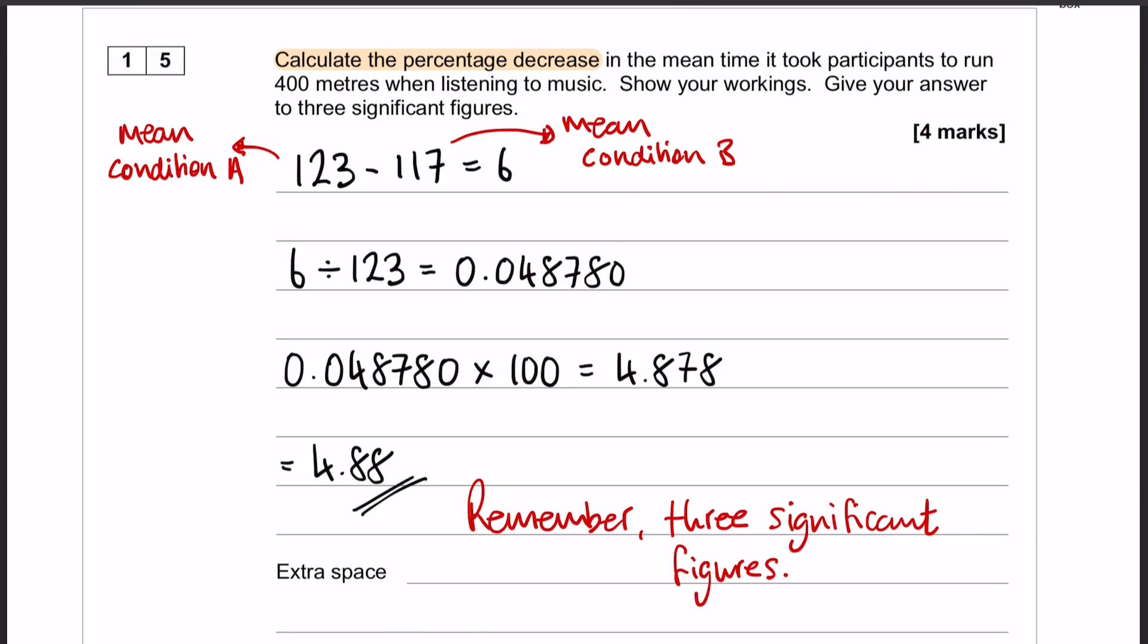Okay, so we need a percentage, obviously, because we're doing a percentage decrease. So we need to multiply 0.048780 by 100, which gives us 4.878. And we have to round to three significant figures, which means that our answer is 4.88.